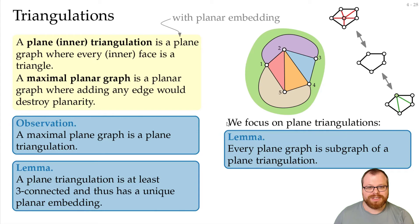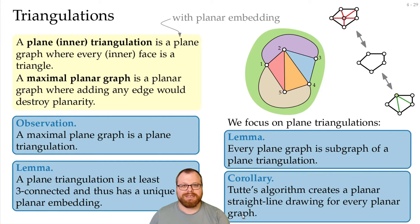With these observations, we already get our first result for today. Because every triangulation is three-connected, we can use Tutte's theorem to draw the triangulation. If we have any plane graph, we just add edges to make it a triangulation, we draw it with Tutte's algorithm, and then we remove the edges again. So Tutte's algorithm creates a planar straight-line drawing for every planar graph. Although, again, the area might be exponential, so it's not polynomially bounded in n. And that's not what we want.